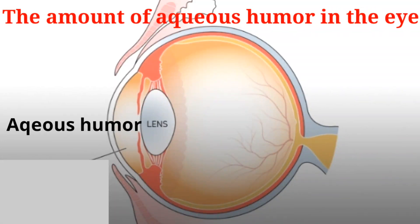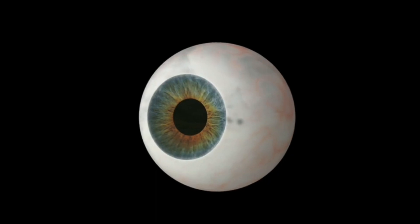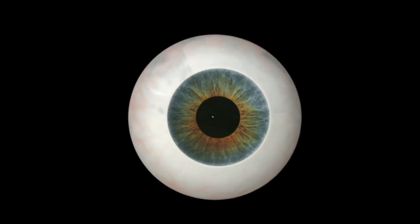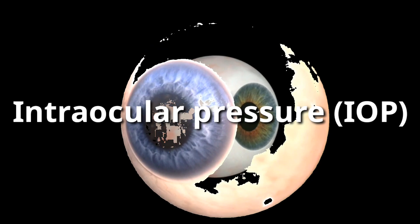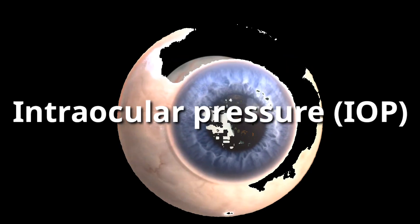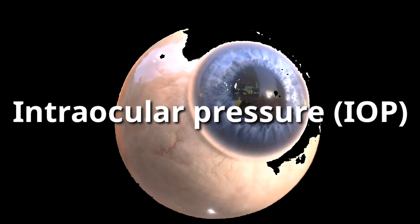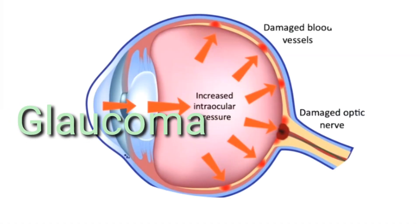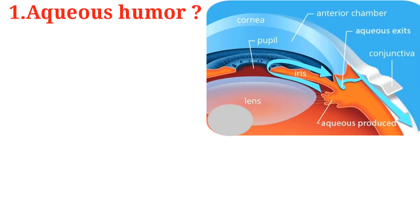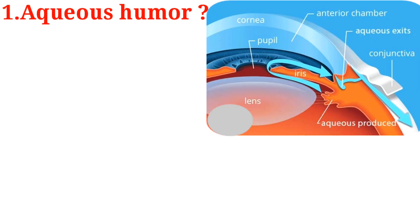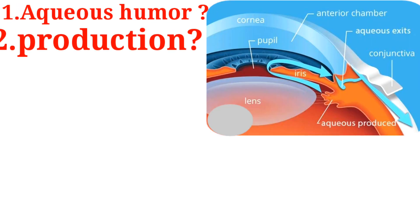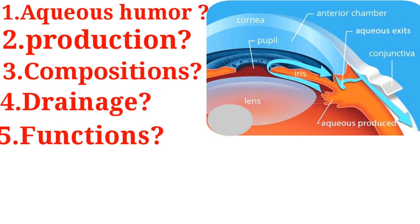The amount of aqueous humor in the eye is what gives rise to intraocular pressure, which largely indicates whether somebody has glaucoma or not. Thus, in order to fully understand what glaucoma is, we need to know what aqueous humor is, its production, composition, drainage and functions, which are what we are to discuss in this video.